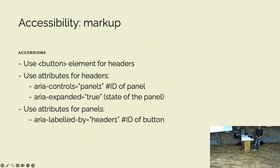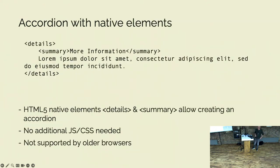A couple of ARIA attributes should be used to communicate extra information to screen readers. For the headers, use the aria-controls attribute pointing to the panel's ID, and aria-expanded set to true when the panel is open. The panels should have the aria-labelledby attribute so they have a title. It's also possible to make accordions with the native details and summary elements — it's always preferable to use native elements, but test them across browsers and screen readers.